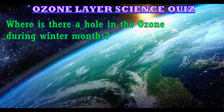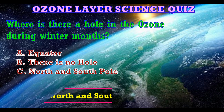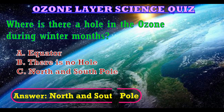The next question is: where is there a hole in the ozone during winter months? The options are: A. Equator, B. There is no hole, C. North and South pole. The answer is North and South pole.